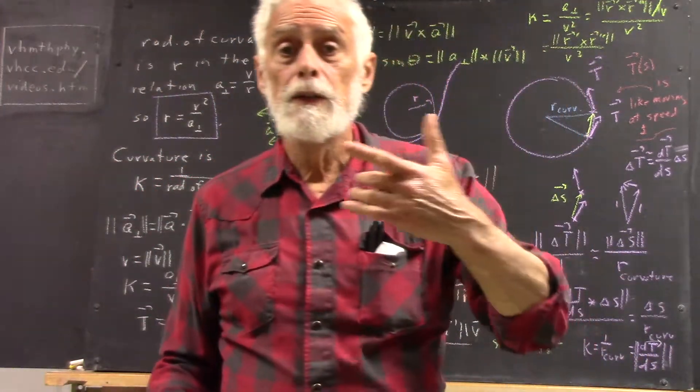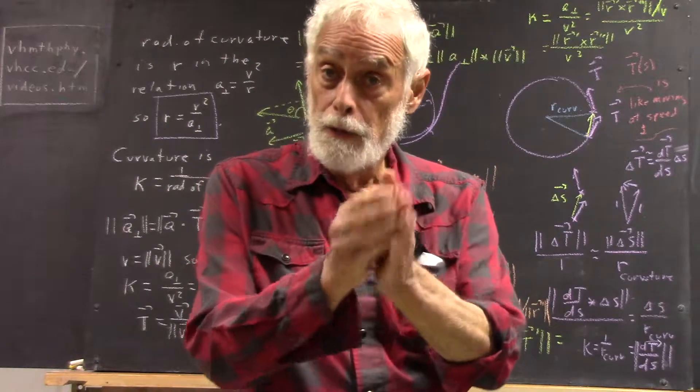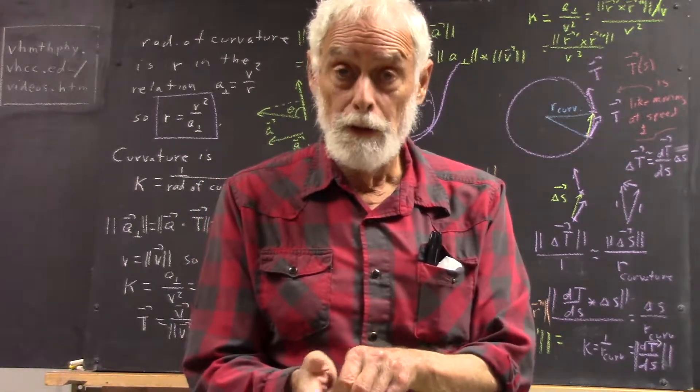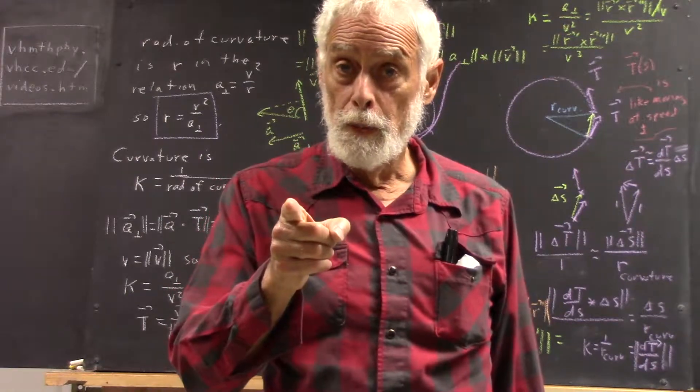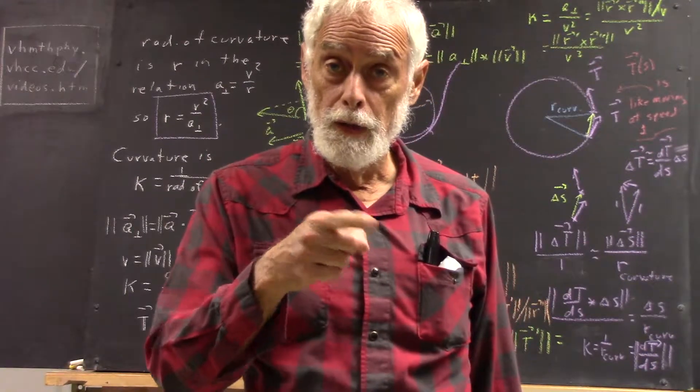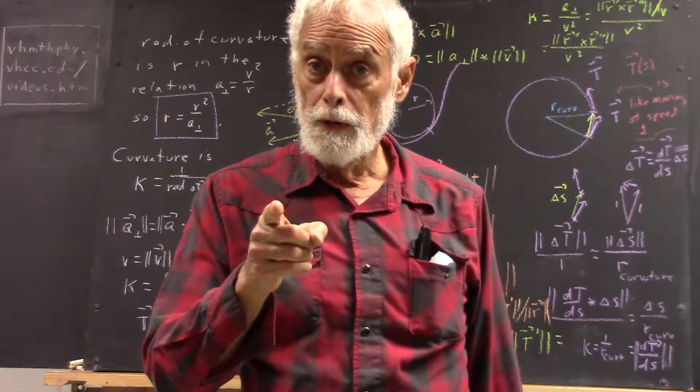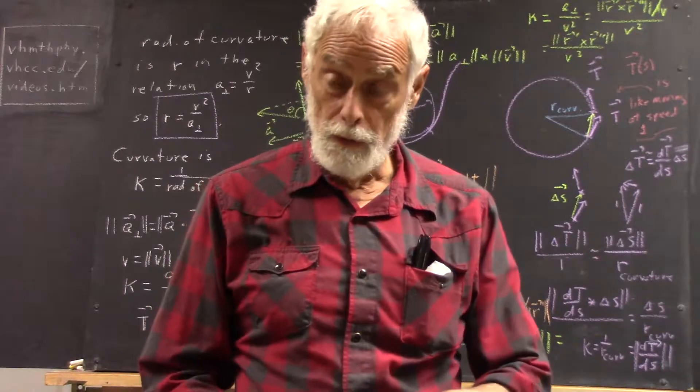My direction is indicated by my unit tangent vector. A unit tangent vector is just a direction vector. So if I go around the curve quickly, my unit tangent vector changes fast. If I go around more slowly, my unit tangent vector changes more slowly.